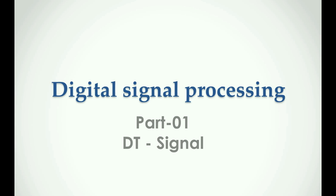Hello everyone. In this lecture, we will talk about discrete time signals — DSP first part. A discrete time signal has a specific value at a specific instant of time. This signal is a discrete time signal. This signal is generated from an analog signal, which is a continuous signal.